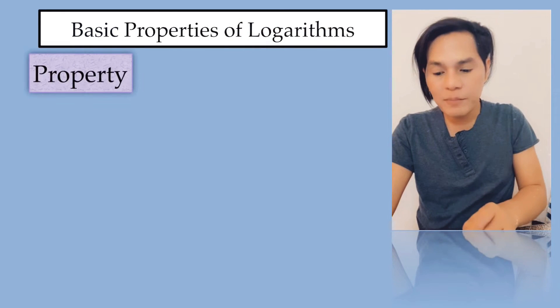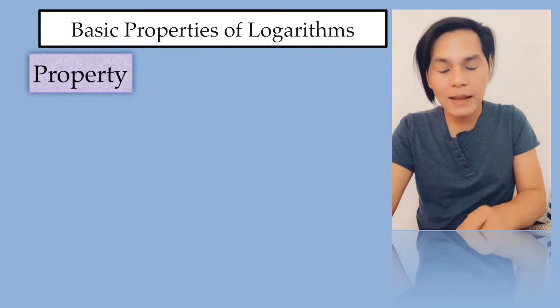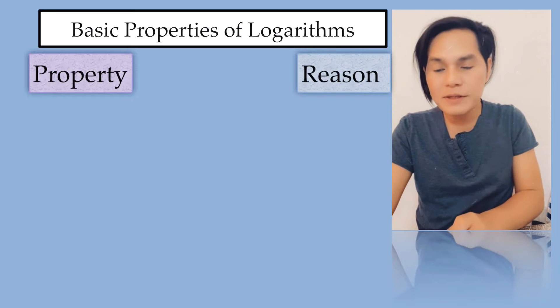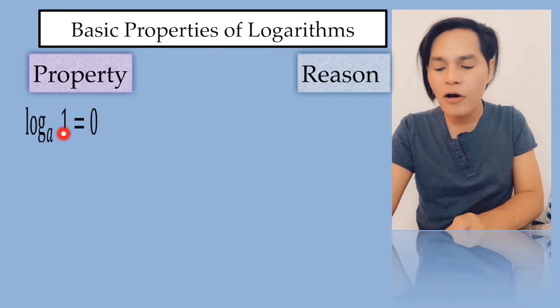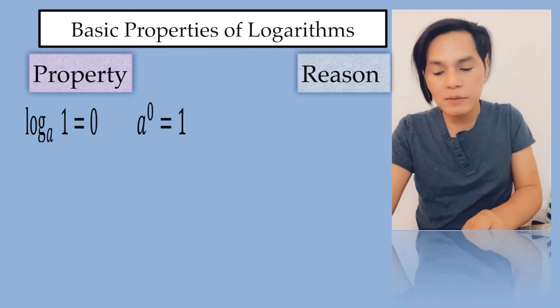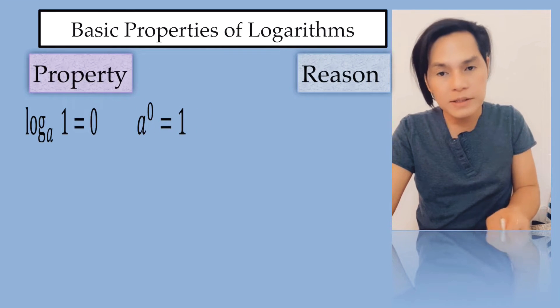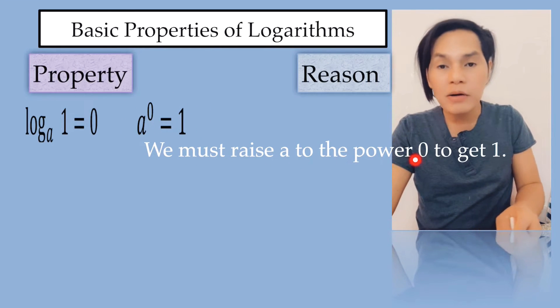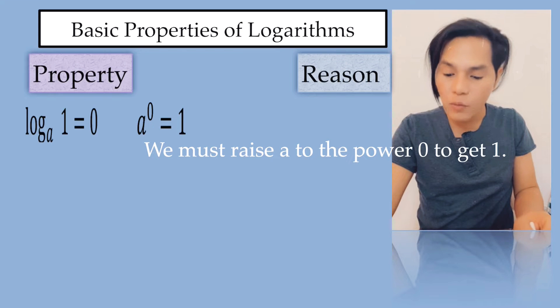I have the property and then the reason on the other side. Look at the first property: the log of 1 to the base a is equal to 0, which in exponential form is a to the power of 0 is equal to 1. The reason is we must raise a to the power of 0 to get 1.